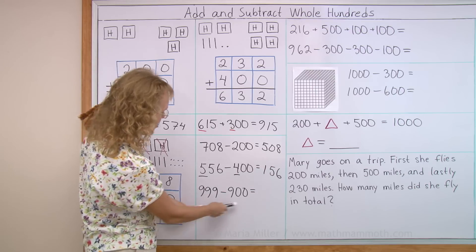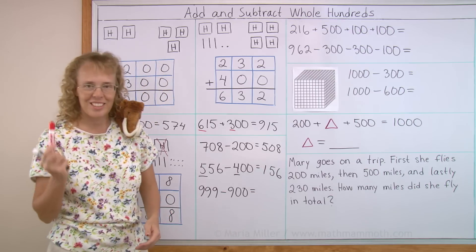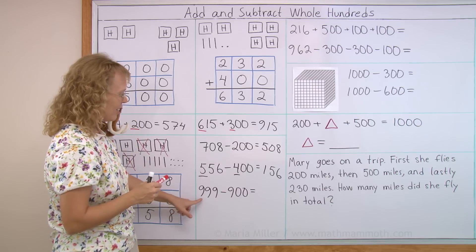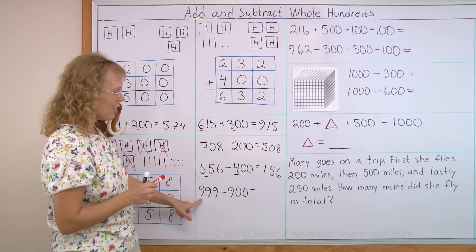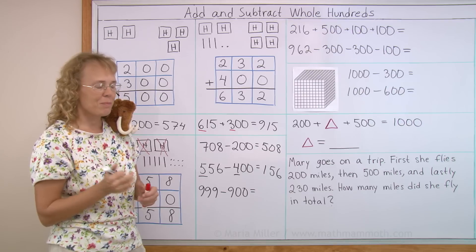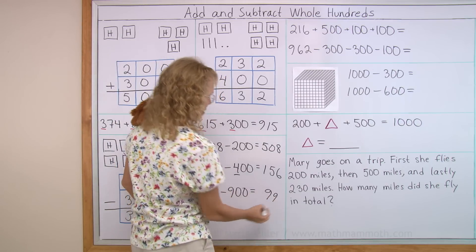And then look at this, Matthew, your favorite number is 9, 999, take away 900. So what is left? If you take away from 900, 900, then there are no hundreds left. We just have 99 left.